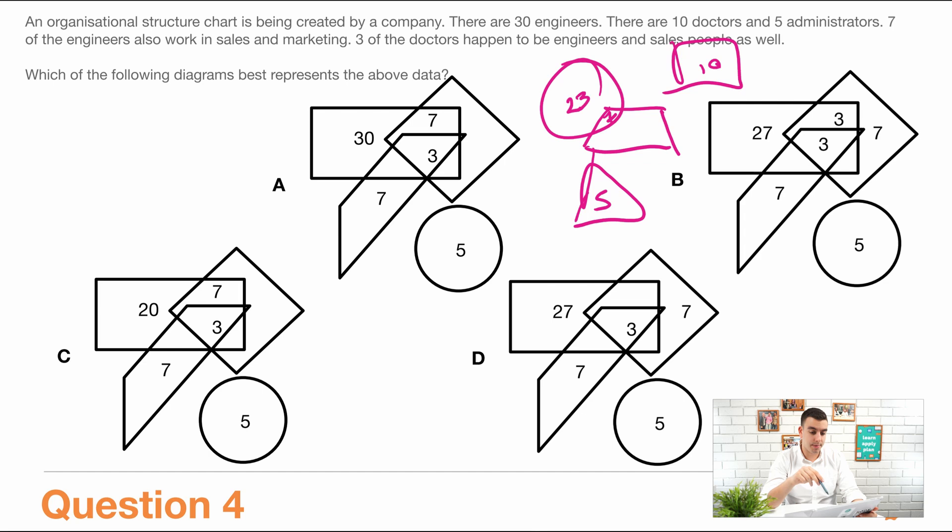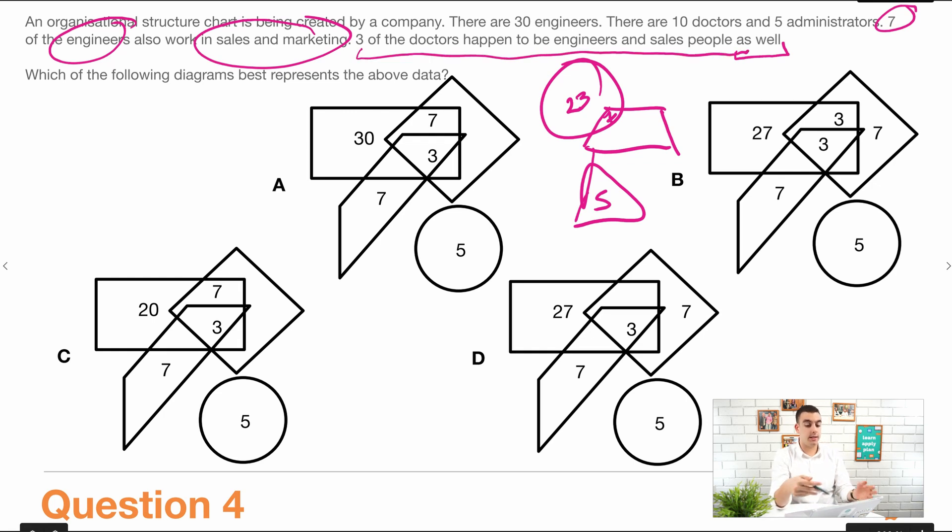And then three of the doctors happen to be engineers and salespeople as well. Now, this is a hard one, but because it says as well, it makes me think that of these seven engineers that also work in sales and marketing, they aren't included in this. So this three is additional as well in the sales and marketing team. So those three doctors have to overlap in all of the different segments. So there has to be a segment where they overlap overall. So using this information, now let's look at the actual questions itself.